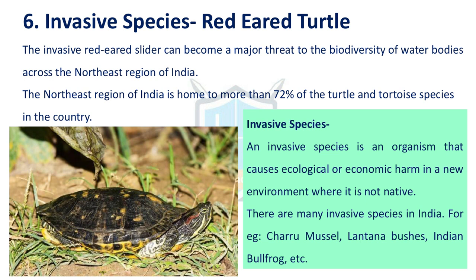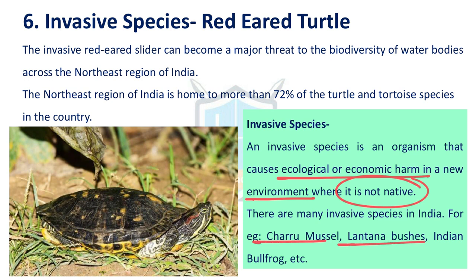The next issue is regarding invasive species. Red-eared turtles found in Assam water bodies are seen as a threat to local biodiversity. Red-eared turtles are not native to India, and northeast India is home to 72% of turtle and tortoise species. These invasive species compete with local species — they grow in numbers while local species, due to heavy competition, decline, leading to loss of biodiversity. An invasive species is an organism that causes ecological and economic harm to a new environment where it is not native. Examples include Charru mussel in Kerala, lantana bushes in Nilgiri Hills, Indian bullfrog, and red-eared turtles.